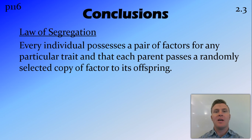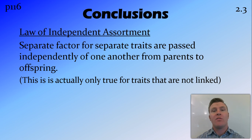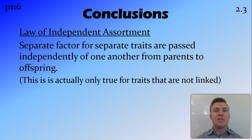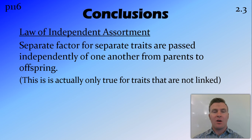The law of independent assortment states that different factors for different traits are passed on independently of each other. So for example, if you have a factor for the trait of white flower that gets passed on, it has no effect on whether the trait for yellow seed pod or green seed pod is passed on from parent to offspring. These two traits and the factors that affect them are totally different and independent of each other. This isn't entirely true for all traits — some traits are linked — but Mendel didn't find this, and there are only a few linked traits in more complex life forms, so don't worry too much about that at this stage.